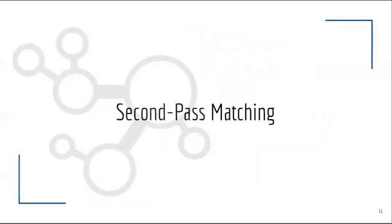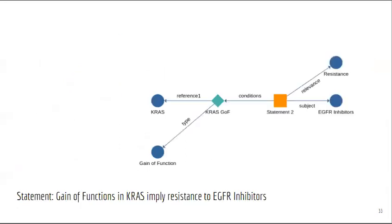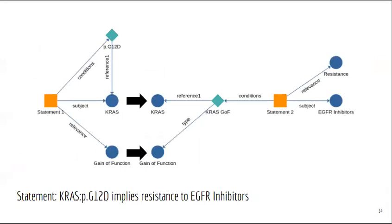The final matching feature I want to talk about today is what we've dubbed second-pass matching. Imagine we have a statement which says that the KRAS G12D variant is a gain-of-function for the gene KRAS. We have another statement which says that gain-of-functions in KRAS imply resistance to EGFR inhibitors. Logically, we can infer that KRAS G12D results in resistance to EGFR inhibitors. This is where the conclusion component of the statement model is so important. In GraphKB, we can effectively create a new variant using this conclusion — KRAS gain-of-function — which we then pass through matching a second time. This allows us to capture these inferred statements, like KRAS G12D implies resistance to EGFR inhibitors, and is quite powerful when your knowledge base has a lot of functional annotation information.